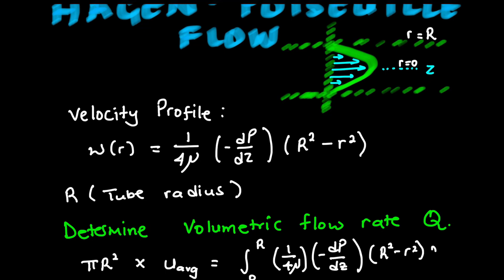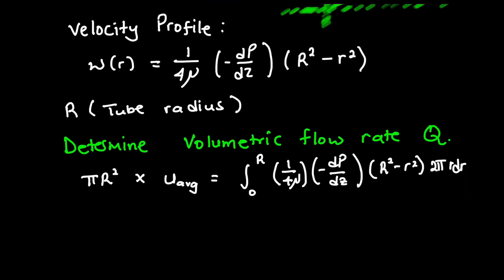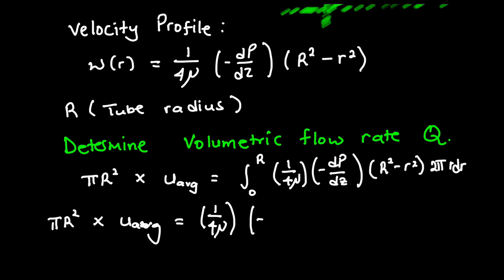We're going to integrate in terms of r, then take outside all the constants. Remember that we are integrating in terms of r, so even the pressure gradient needs to be taken outside. Then 2 pi, from 0 to big R, we are left with R squared minus small r squared.